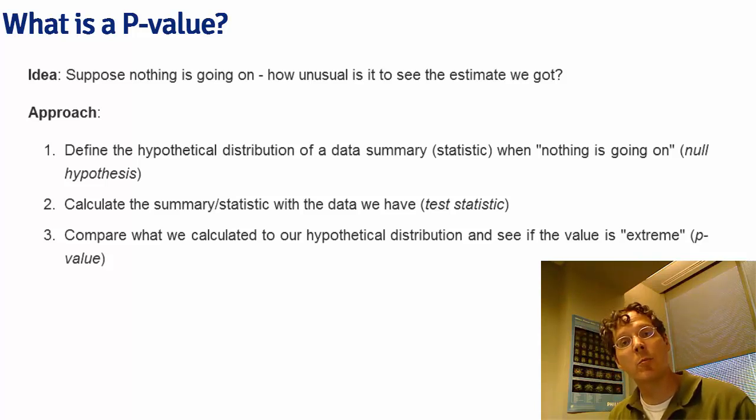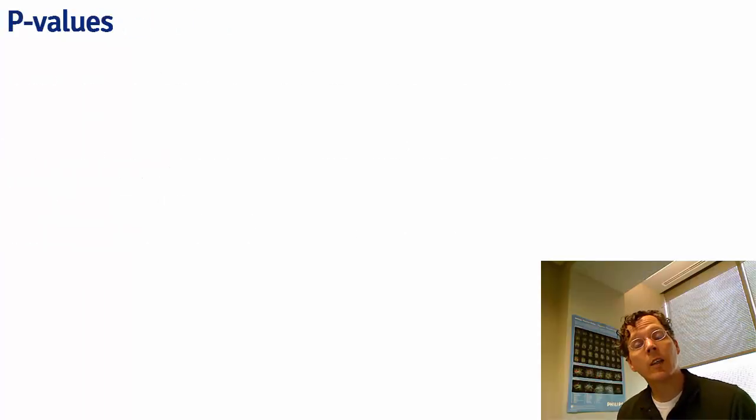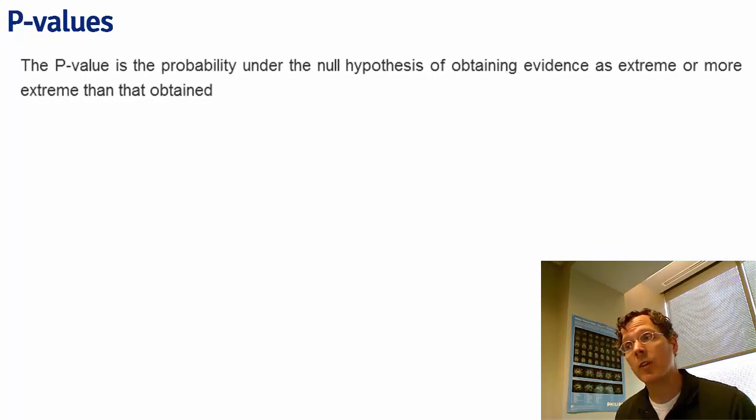In other words, we compare what we calculated to our hypothetical distribution and see how extreme it is toward the alternative. If the p-value is small, the probability of observing a test statistic as extreme as we saw is low if the null hypothesis were true. Let's go over p-values with a little bit more formality. The p-value is the probability under the null hypothesis of obtaining evidence as or more extreme than was actually obtained. Usually we're talking about evidence here in terms of the test statistic, so it's the probability of obtaining a test statistic as or more extreme in favor of the alternative than was actually obtained.